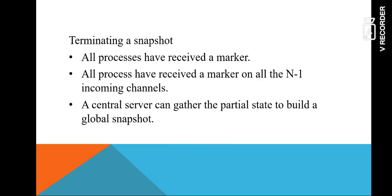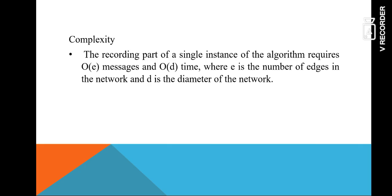Finally, the algorithm terminates once all processes in the system have received a marker message. All processes have received a marker on all n minus 1 incoming channels — so with n total processes, each must receive n minus 1 marker messages. A central server can then gather the partial states to build a global snapshot, collecting all partial states from each process and channel and using them to construct the global snapshot. The complexity of this algorithm is O(e) messages and O(d) time, where e is the number of edges in the network and d is the diameter of the network.